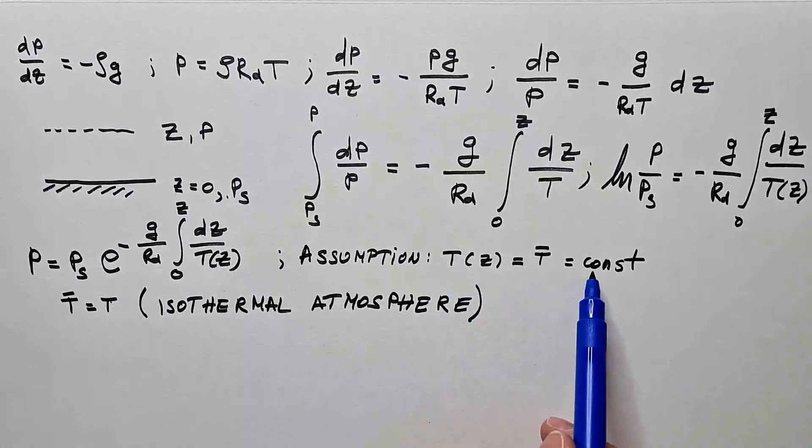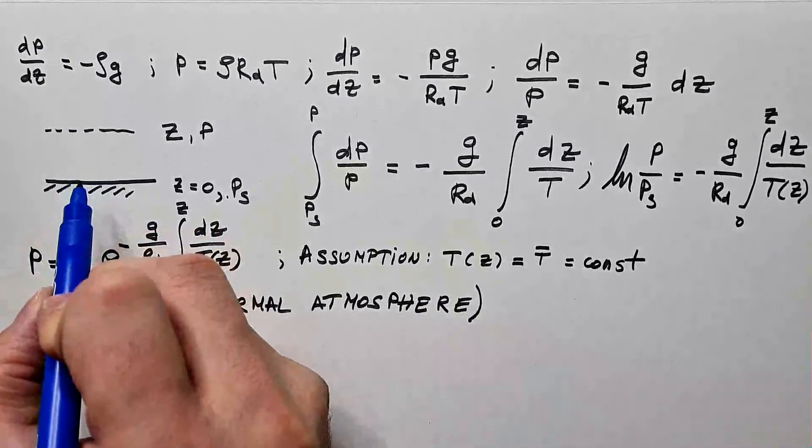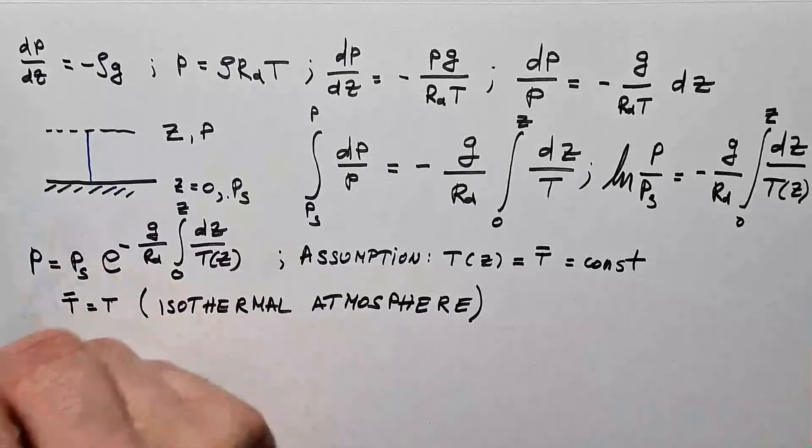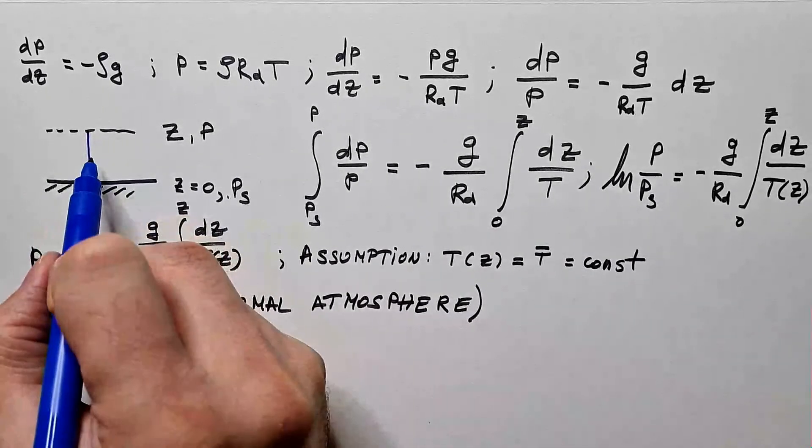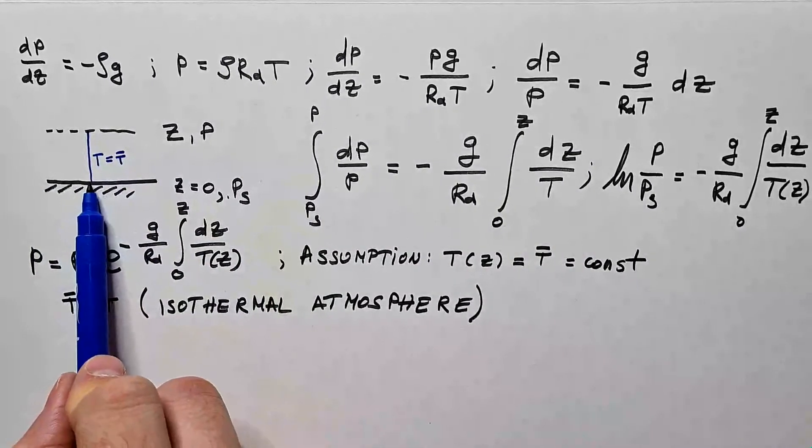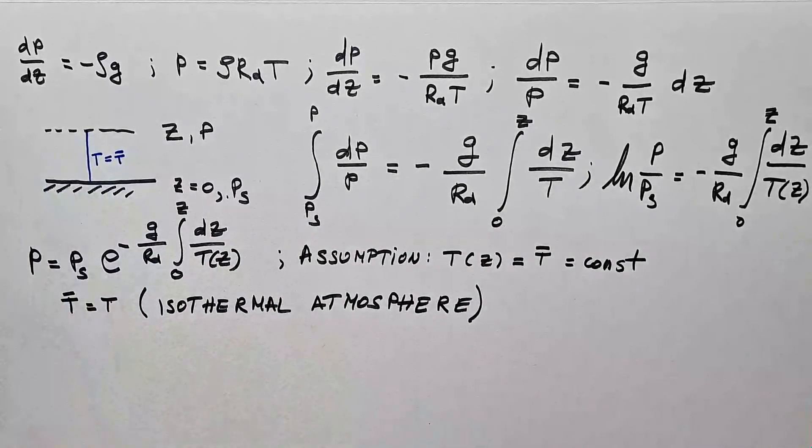So, what this assumption would mean here in graphical form, that the temperature is just straight vertical line with height. This is T equal T mean, mean temperature between surface and this height z.